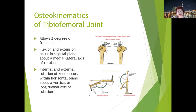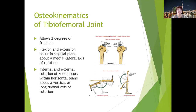The tibiofemoral joint allows two degrees of freedom: flexion and extension in the sagittal plane about a medial-lateral axis, and internal and external rotation in the horizontal plane about a vertical or longitudinal axis. Flexion and extension are voluntary movements, but internal and external rotation are not truly voluntary — they happen as a consequence of the arthrokinematics at the end range of extension.